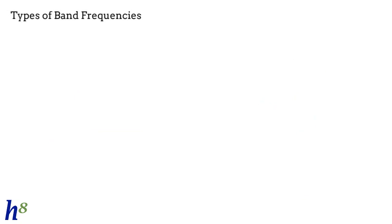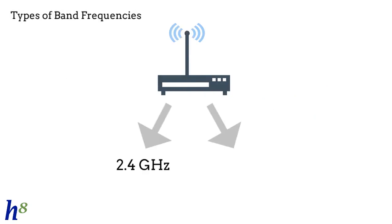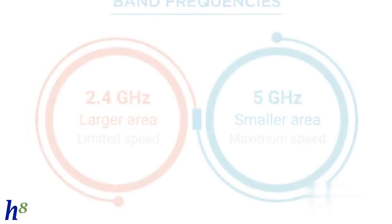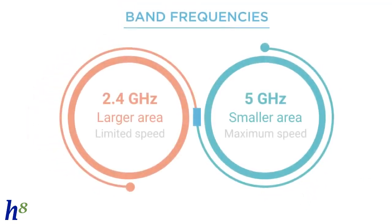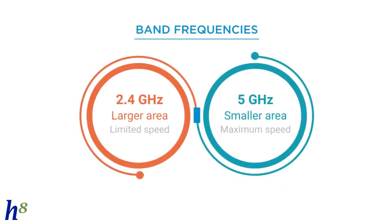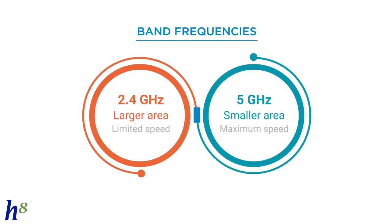Types of Band Frequencies: Modern generation routers offer two different band frequencies, 2.4 GHz and 5 GHz. The 2.4 GHz is good for providing network coverage in a larger area but fails to provide the maximum speed. The 5 GHz is good for providing maximum speed but limited to a small area only.